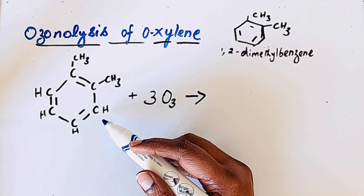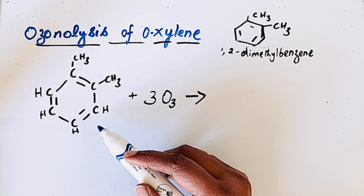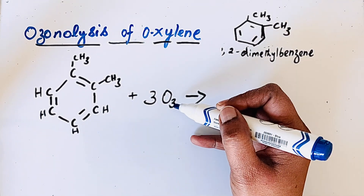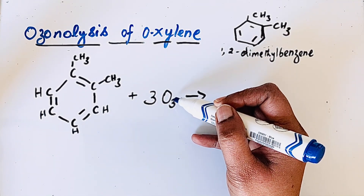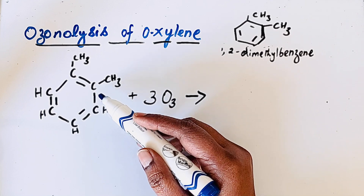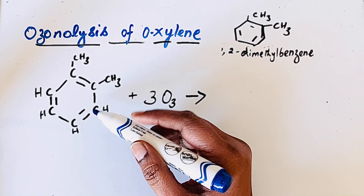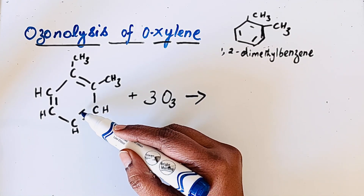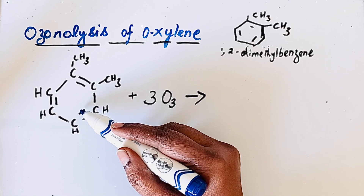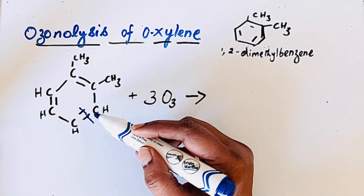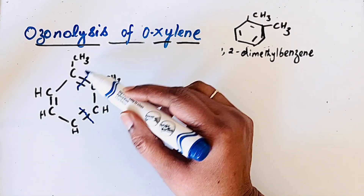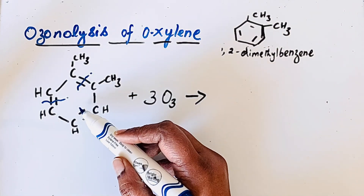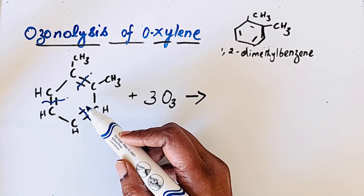Let us see a simple technique to understand the ozonolysis product. Whenever ozone is added to an alkene, it first attacks the double bond. So wherever there is a double bond, cleavage takes place. There are multiple double bonds in xylene.